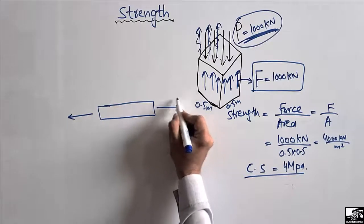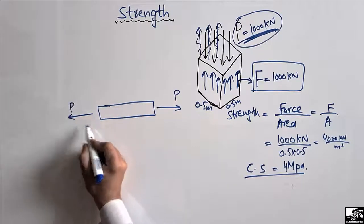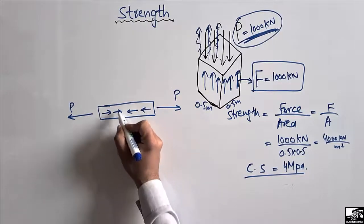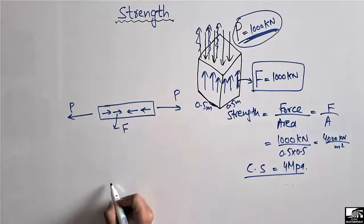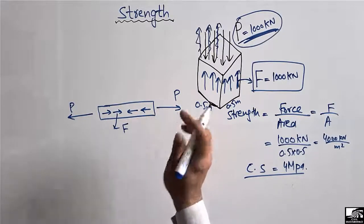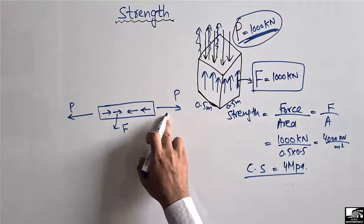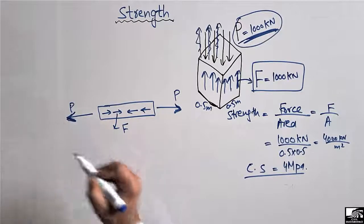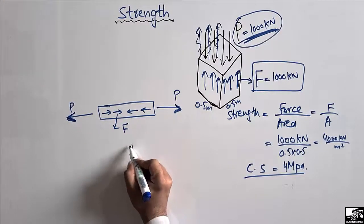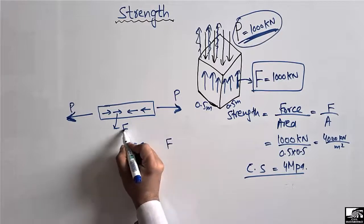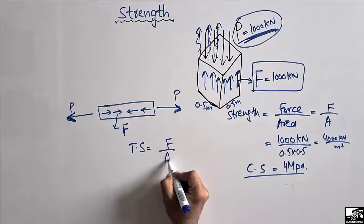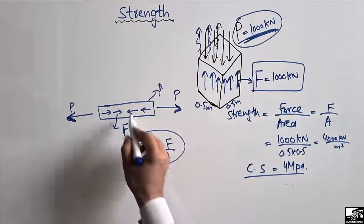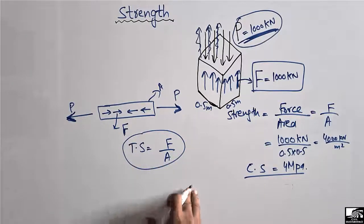Similarly, if we take a steel bar with a tension load P applied to it, there will be some internal resistance created in the material to resist this load, represented by F. This is called the tensile resistance, or tensile strength, because the load was acting as a tensile load. The tensile strength equals the internal force divided by the cross-sectional area of the steel bar.